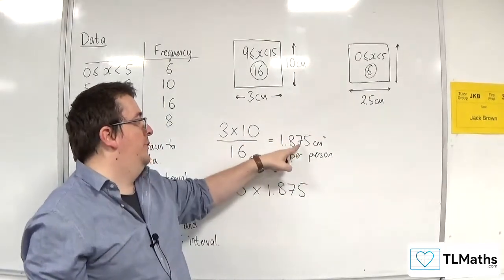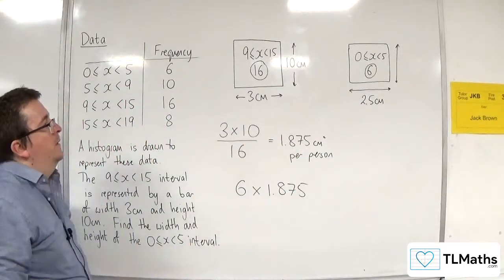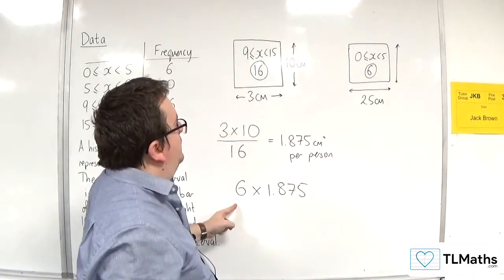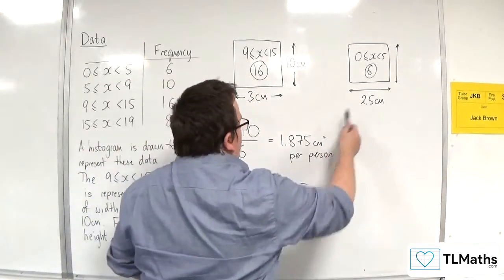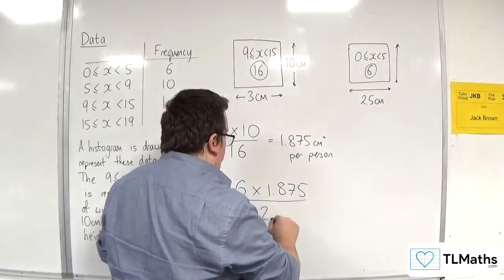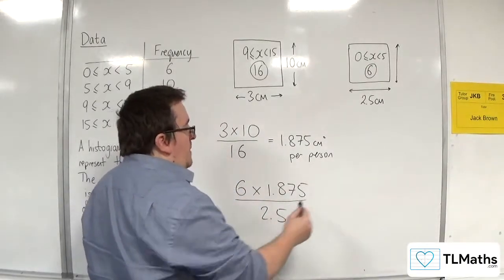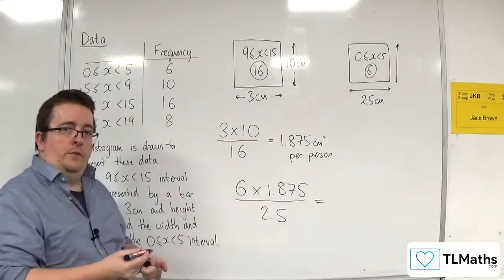Because I've got 6 people, and I know per person it's got to have that same area. So, if that's the area of the block, then I can divide it by the width. And that should give me the height of that rectangle.